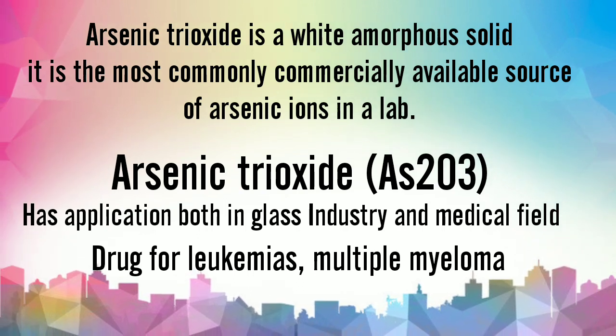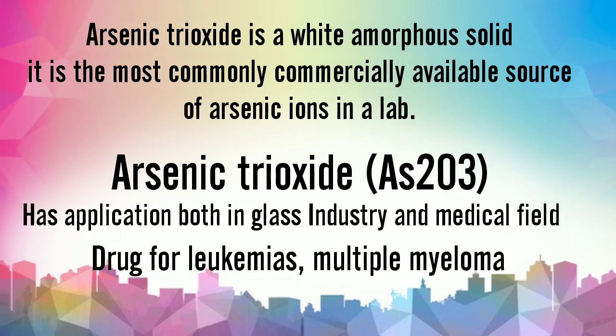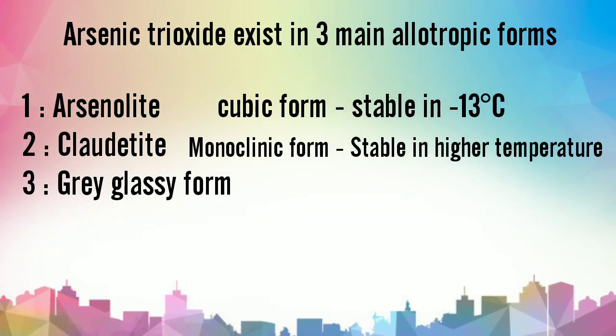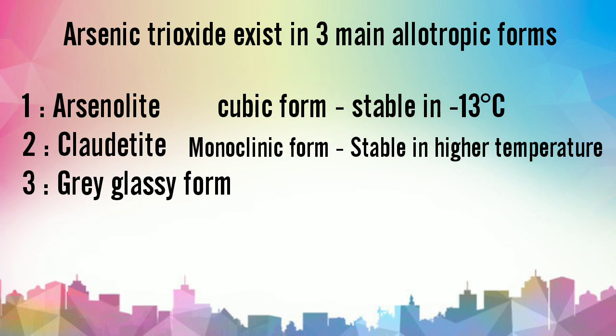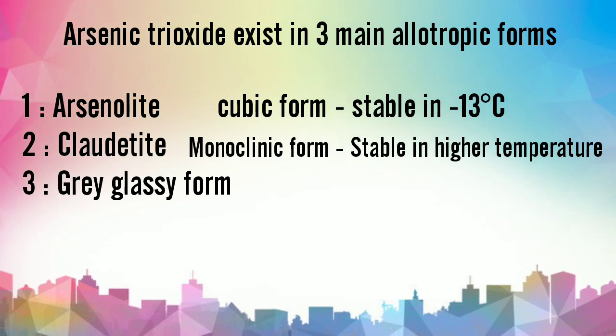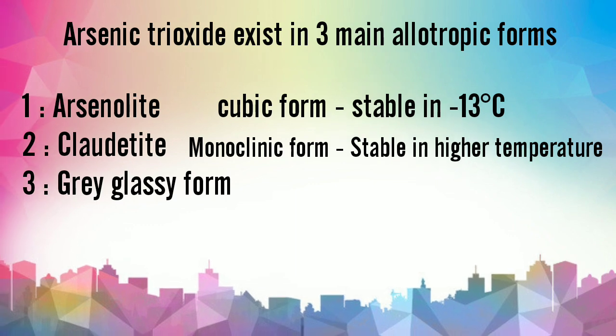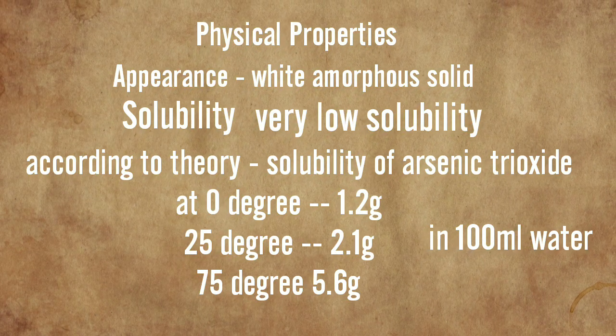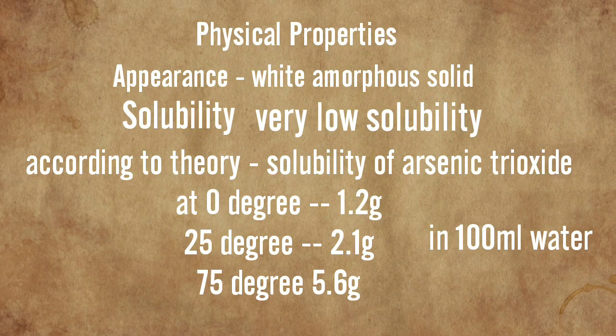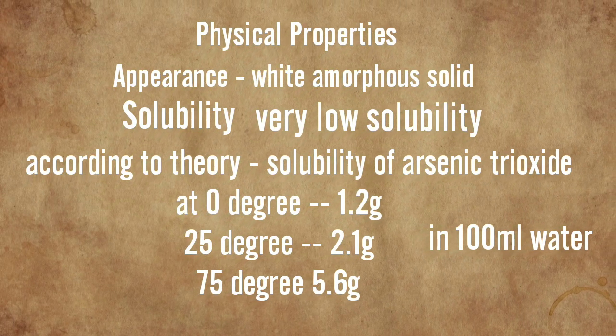And medical field for the treatment of leukemias. The three main allotropic forms of arsenic trioxide are arsenolite, claudetite, and gray glassy amorphous form. Physical properties of arsenic trioxide: it appears as a white amorphous solid and it has very low solubility in water.